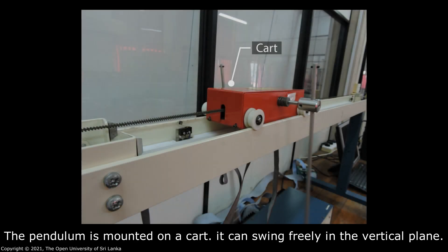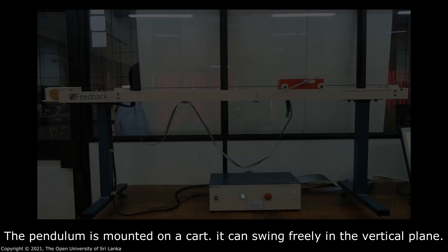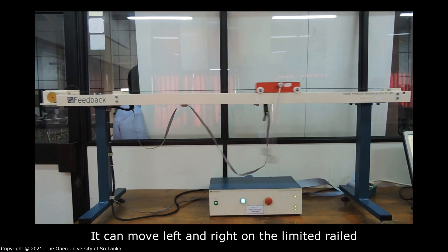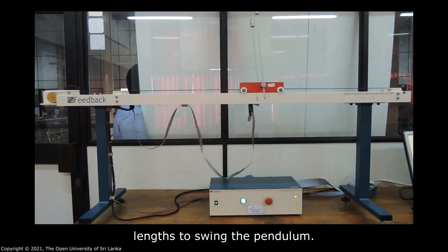The pendulum is mounted on a cart. It can swing freely in the vertical plane. The cart is driven by a DC motor connected by belt. It can move left and right on the limited rail length to swing the pendulum.